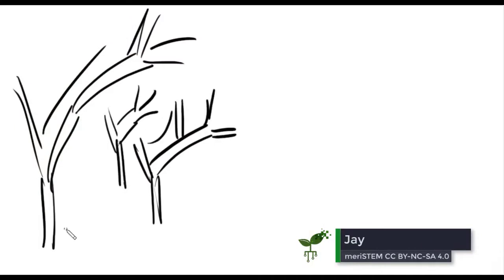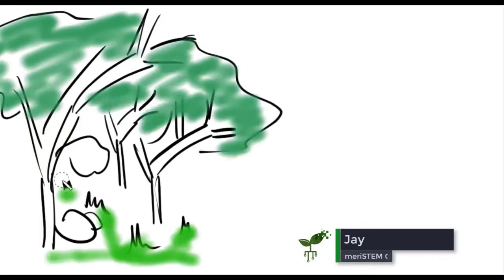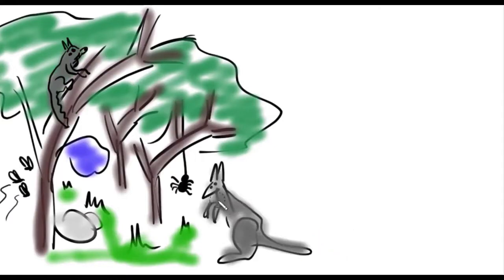So far in this unit you've been looking primarily at plant cells and we're going to look at animal cells next. So we need to think about how we classify organisms.